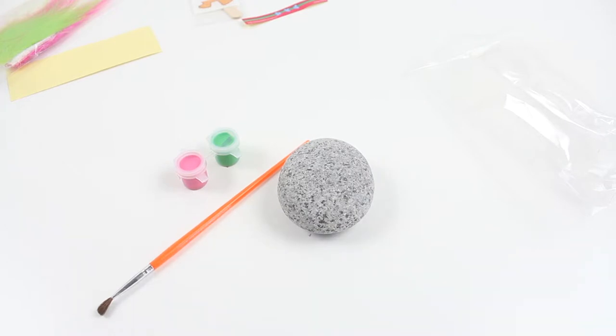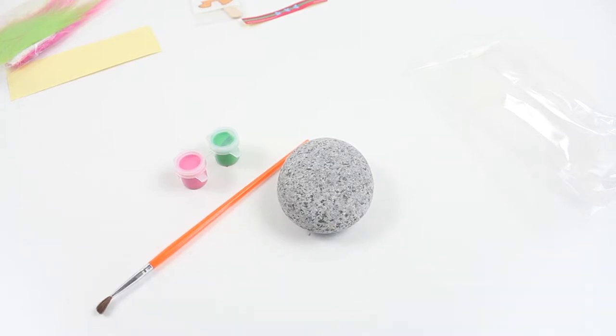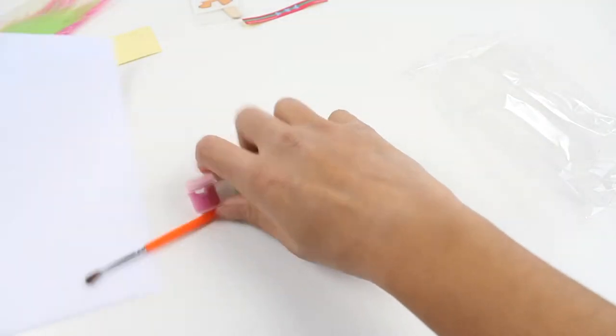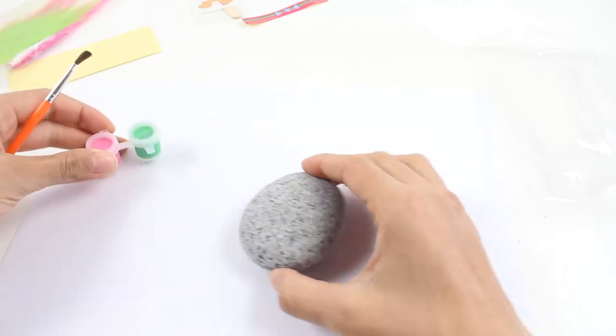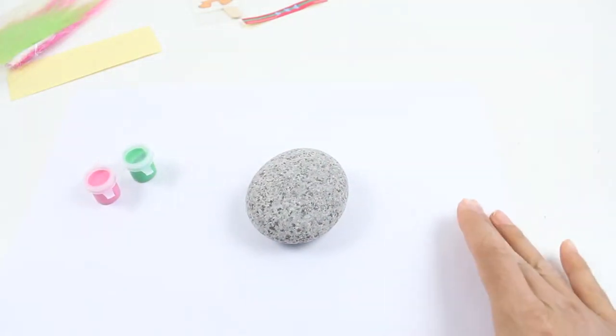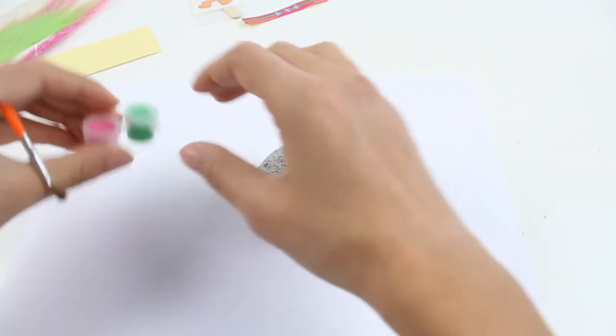Now, children, whenever you paint, it's always wise to have a little sheet of paper on the table to make sure that you don't get any paint on the table. Let's start.